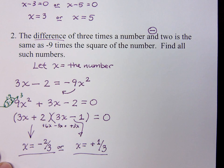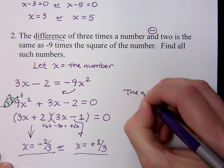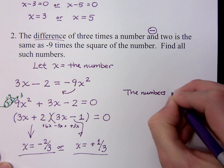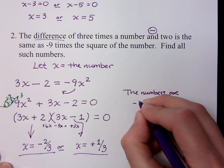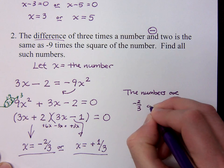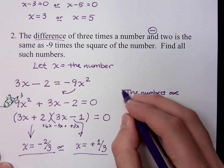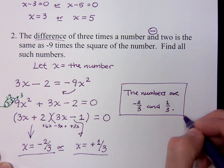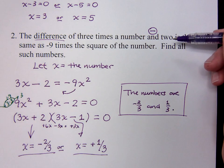So I just have to find the numbers, state the answer, and we can say this. We can say that the numbers are negative two-thirds and positive one-third. These are the numbers that would satisfy this statement up here, where the difference of 3 times the number and 2 is equal to negative 9 times the square of the number.